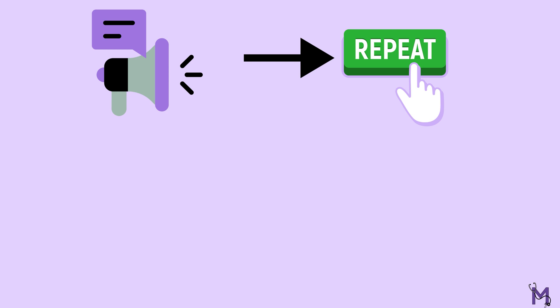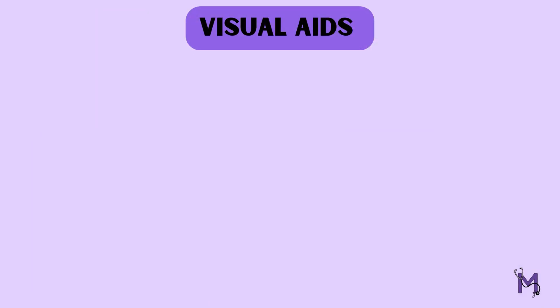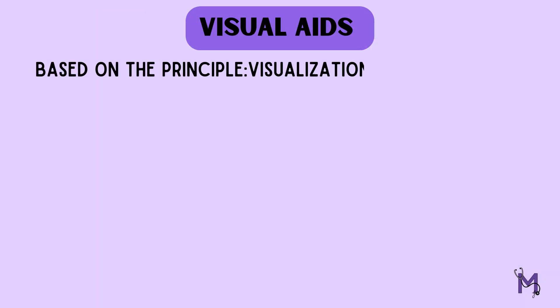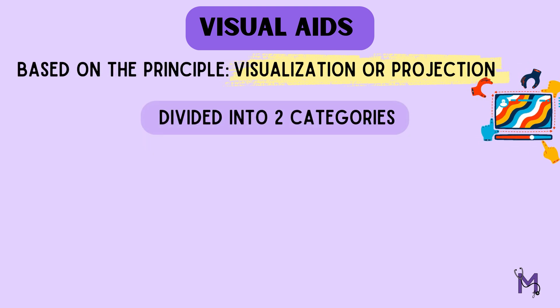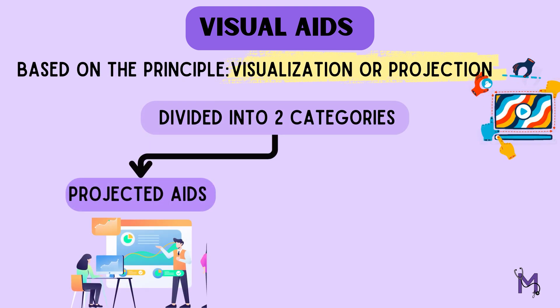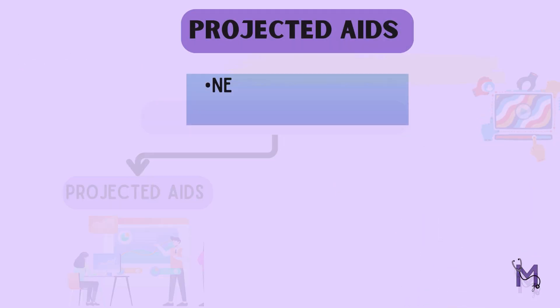All these aids can reproduce any kind of word and can also be used for entertainment and mass communication purposes. Next we'll talk about visual aids. These aids are based on the principle of visualization or projection. They help the public to understand concepts better as they can visualize them. These can be further divided into two more categories: projected and non-projected aids.